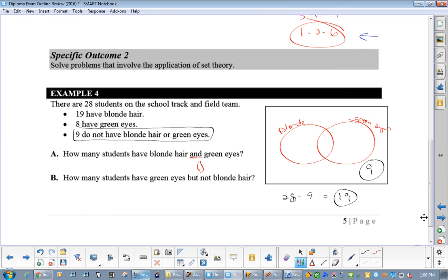This entire thing has to add up to 19, correct? Because 19 have blonde hair. We have 19 plus 18 equals 27. Minus 19 equals the football. And that equals 8.